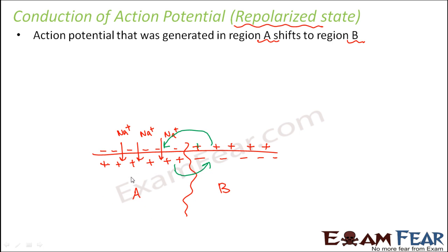The first step was the resting state where it was polarized. The next step was the generation of action potential where the polarity got reversed — that was the depolarized state. Now the polarity gets reversed again, and that is why it is repolarized. So: first polarized, then depolarized, then repolarized. Meanwhile, the potential difference — the action potential — that existed in region A gets shifted from A to B.